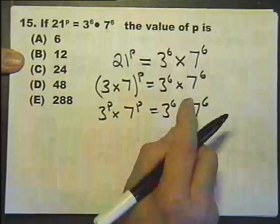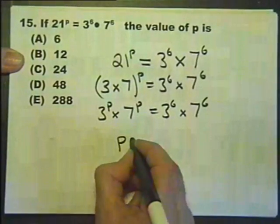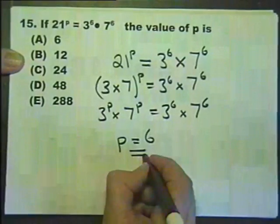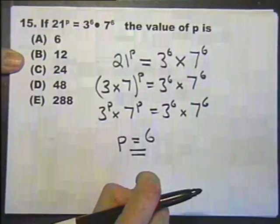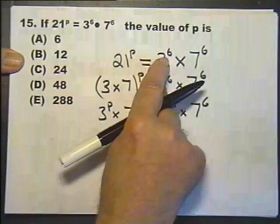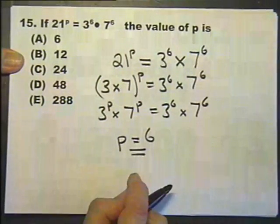So I have deduced that p has a value of 6. You can go back and check that. Since you've got a calculator, work out 21 raised to the power of 6 and you'll get the same answer.